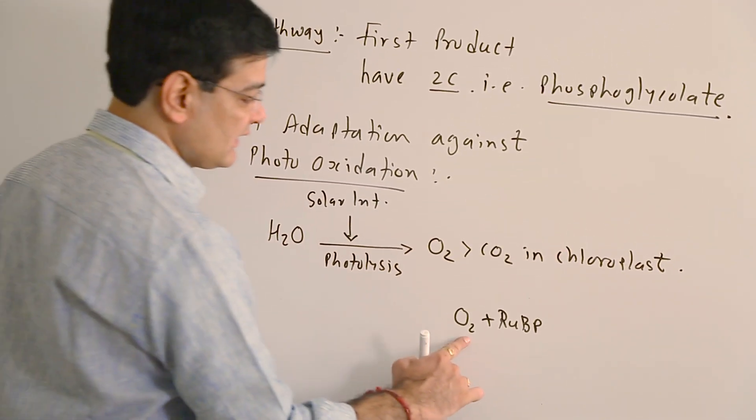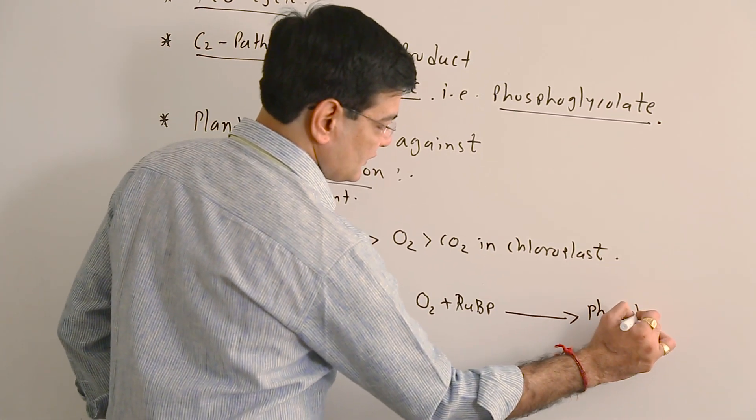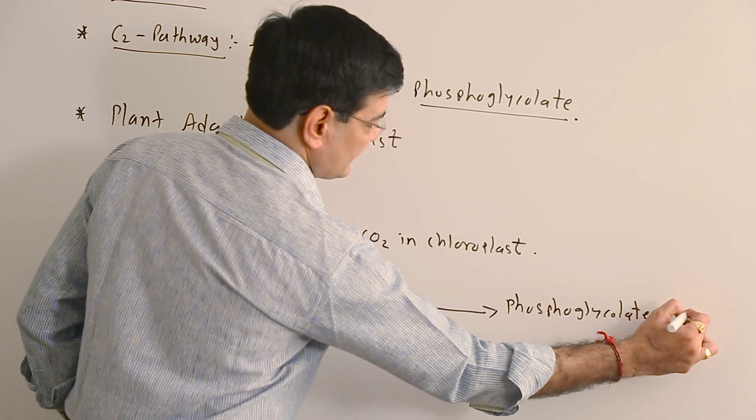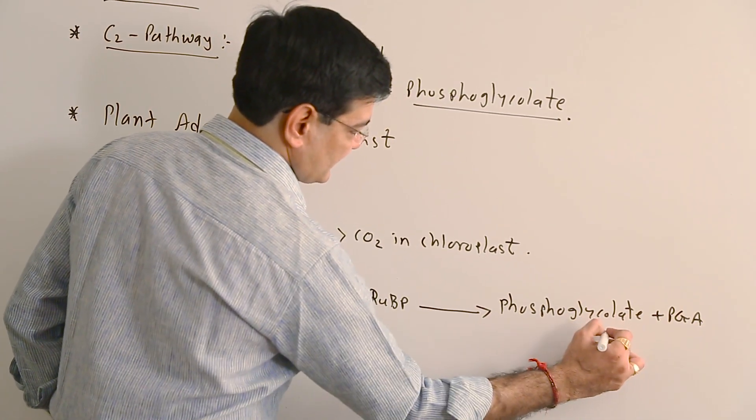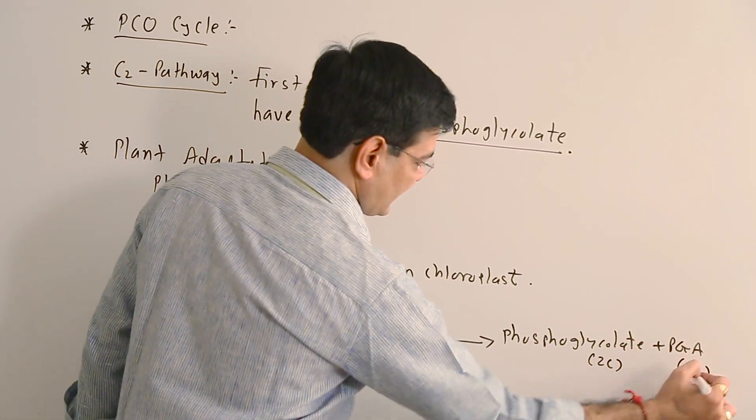And oxygen binds with RuBP to form phosphoglycolate and PGA. Phosphoglycolate, as I told earlier, contains two carbons; PGA contains three carbons.